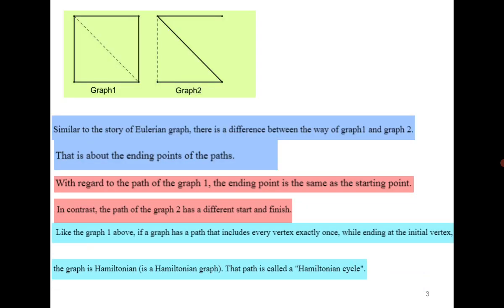So it means that if a graph has a path that includes every vertex exactly once while ending at the initial vertex, then we say that the graph is a Hamiltonian graph. It means the graph has a Hamiltonian cycle.